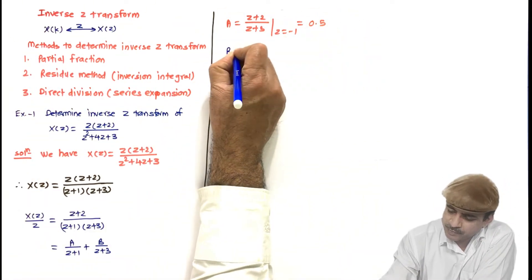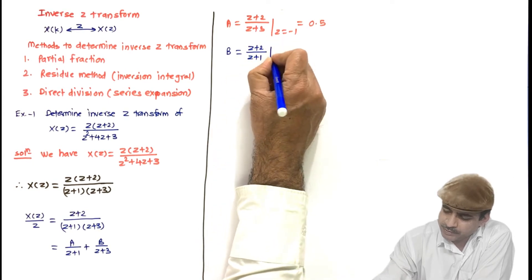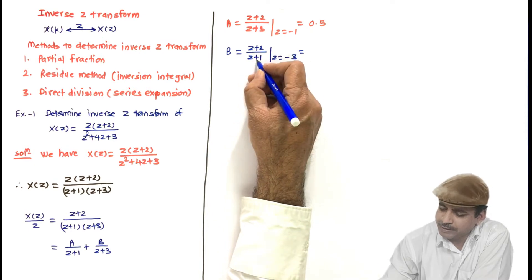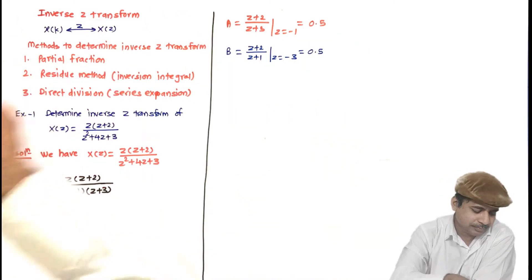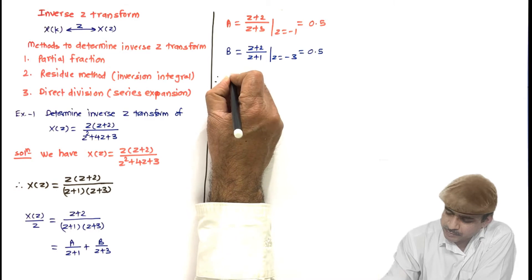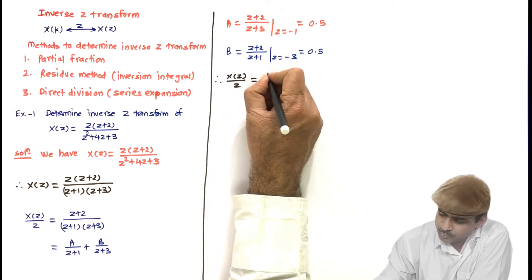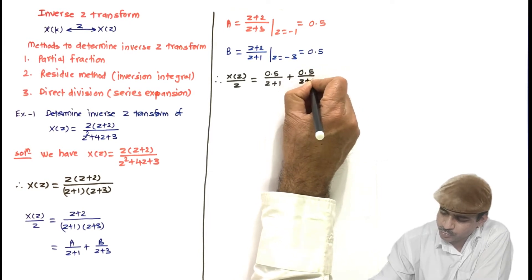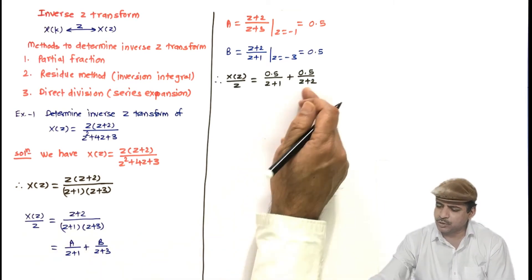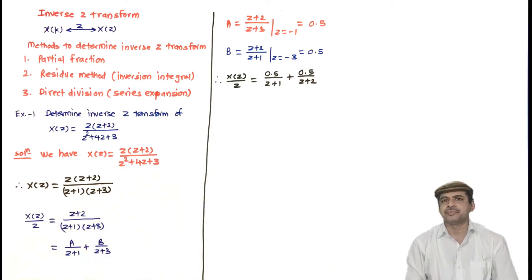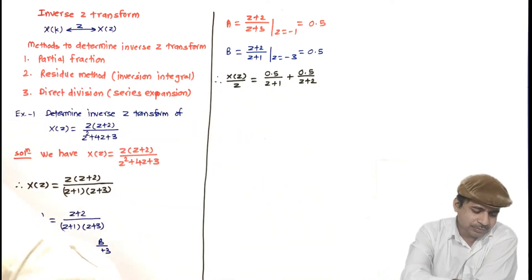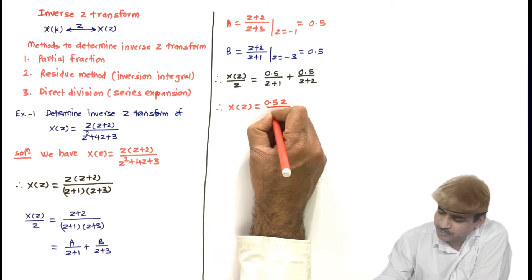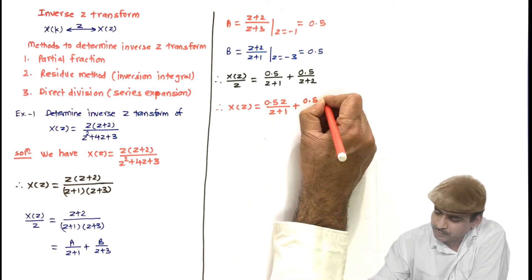Now B: set Z equal to minus 3, giving (Z+2)/(Z+1) = (−1)/(−2) = 0.5. So X of Z by Z equals 0.5/(Z+1) plus 0.5/(Z+3). After finding partial fractions it is always better to cross-verify by expanding back to avoid mistakes.